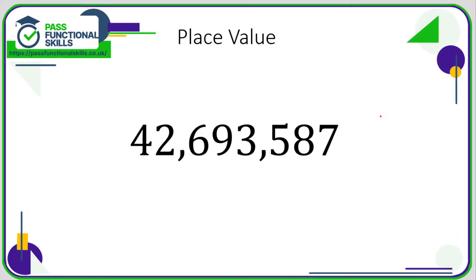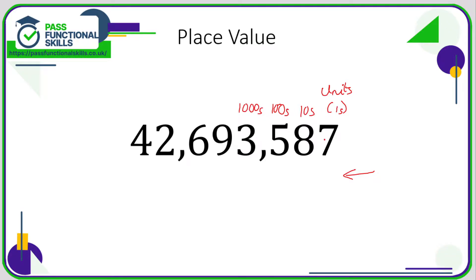On the screen here, we've got a really large number, which is 42,693,587 — just a number I picked at random. Going from right to left, let's take a look at what each column represents. The first column is our units column, otherwise known as our ones column. The next column is our tens, then hundreds, then thousands. Hopefully you see the pattern here.